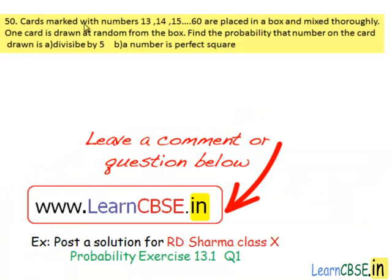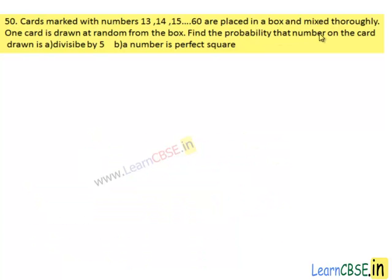Q50. Cards marked with numbers 13, 14, 15, and so on up to 60 are placed in a box and mixed thoroughly. One card is drawn at random from the box. Find the probability that the number on the card drawn is divisible by 5, or that the number is a perfect square.